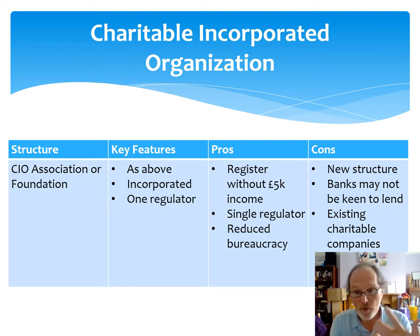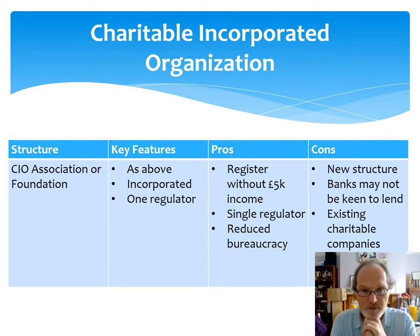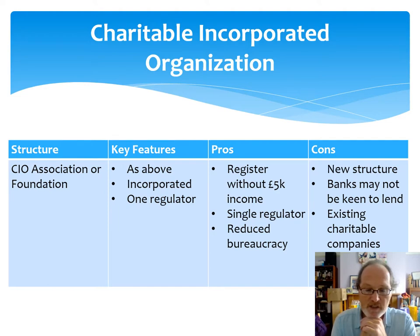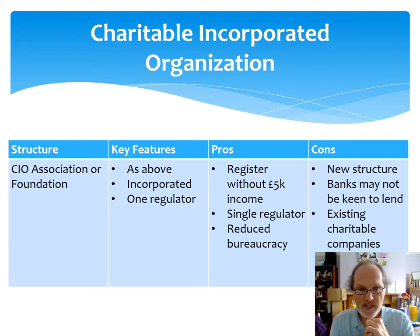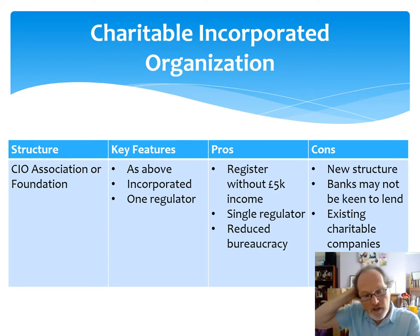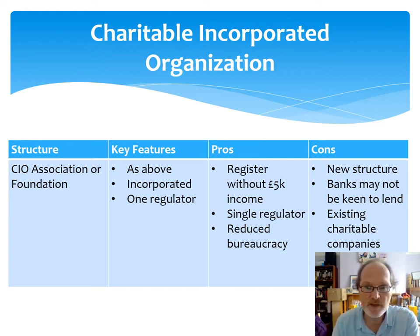The same features apply for CIOs — you have to have charitable purpose and public benefit, and you still get a charity number so they're treated exactly like charities. There are two core models: an association, which is a wide membership organization that elects a board of trustees, or a foundation model, which is where a small group of people come together to create a charity. The advantages include that one regulatory route reducing bureaucracy, and you can register a CIO without any income — you can go straight into having a charity number. They're still fairly new and some banks have been hesitant to lend money to CIOs, although that is becoming less of a problem. CIO is probably the one to look at if you're going to register a charity, because you get that single regulatory route.